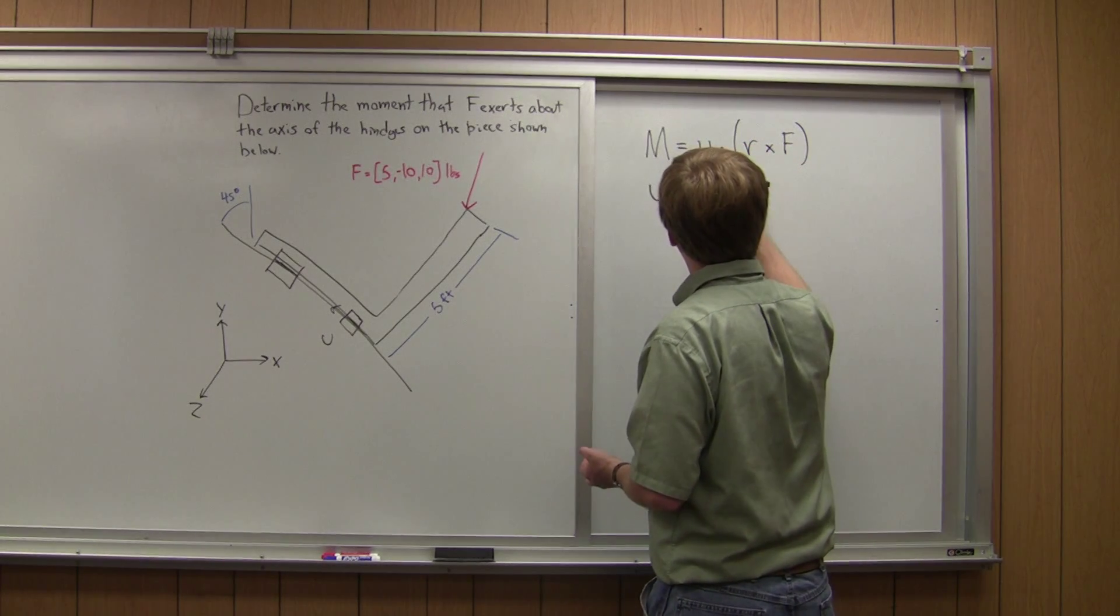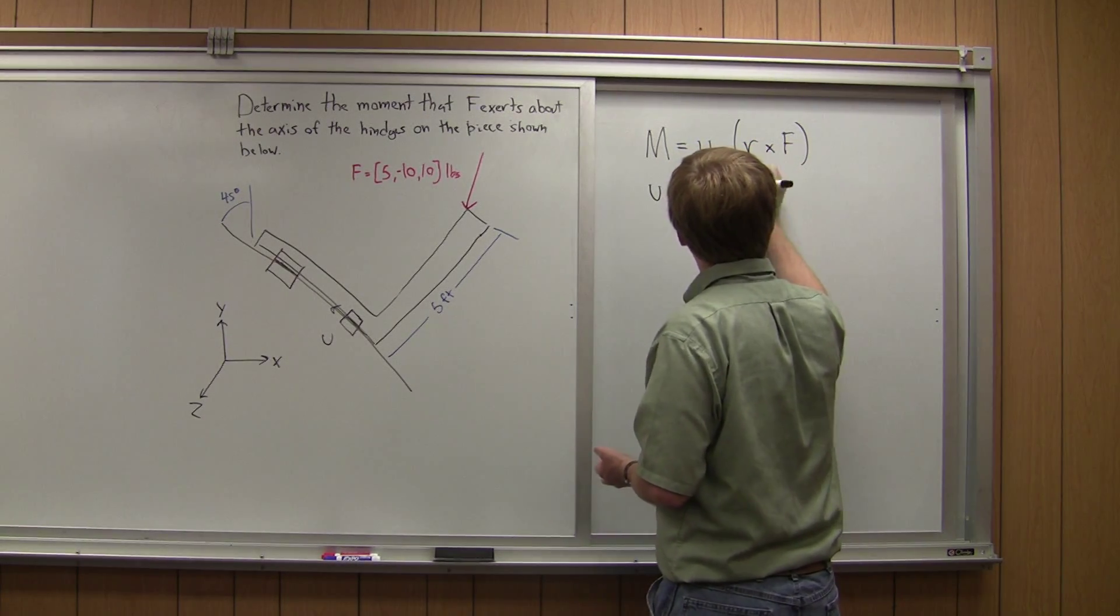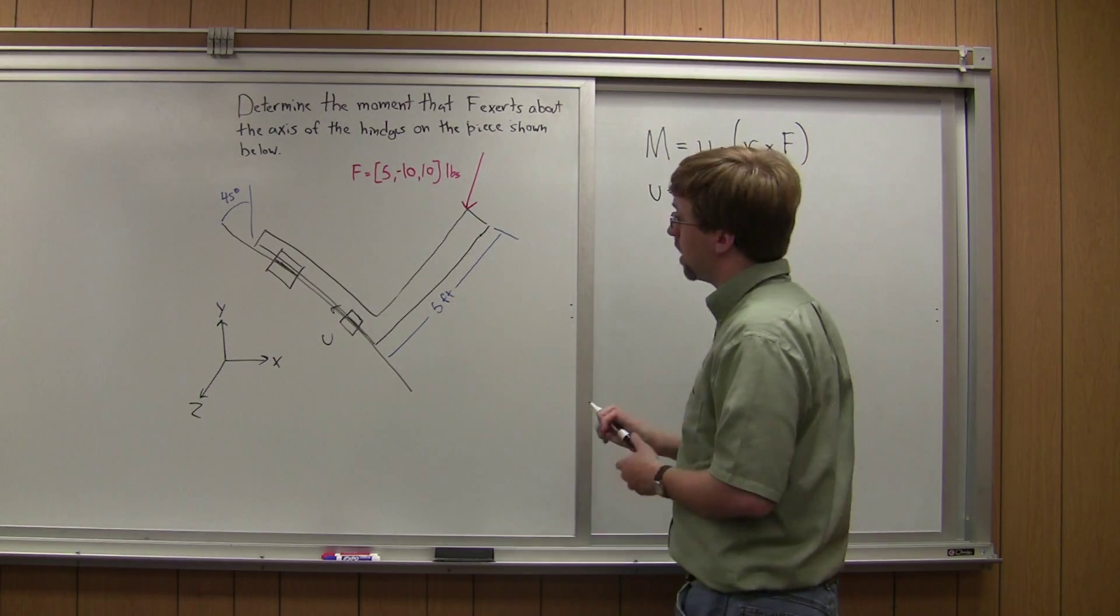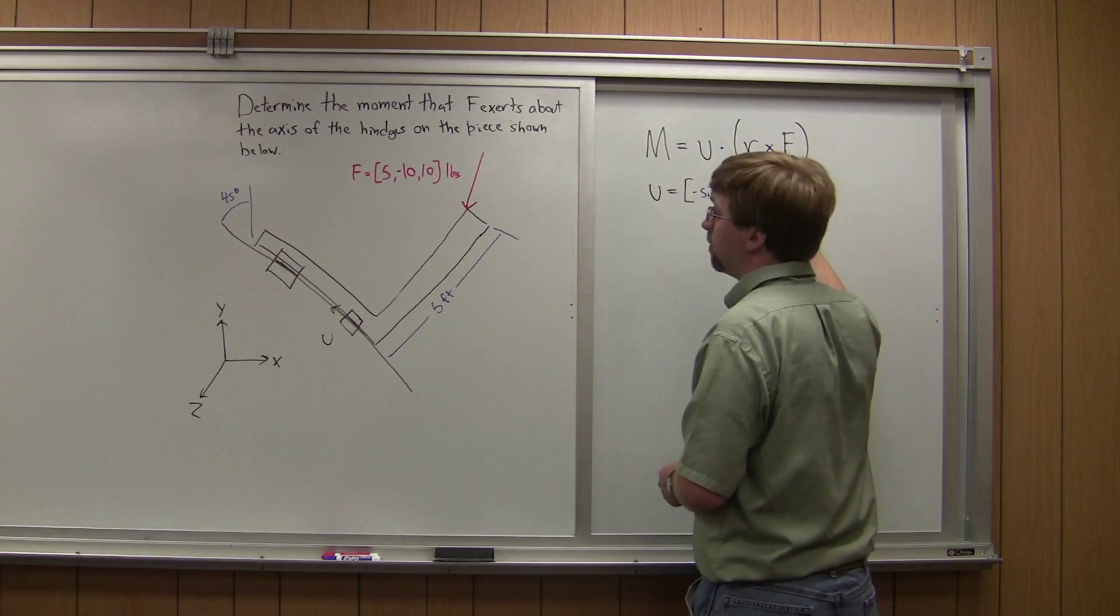Negative sine 45. In the y direction it's going up. It's going up by cosine 45.